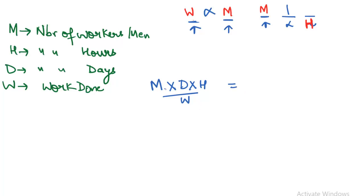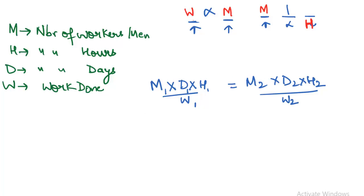So basically, M1 D1 H1 divided by W1 is equal to M2 D2 H2 divided by W2. This is the formula we use. If hours are not given, you can remove that variable. The quantities that are the same can be cancelled out. Directly proportional quantities stay on the same side.